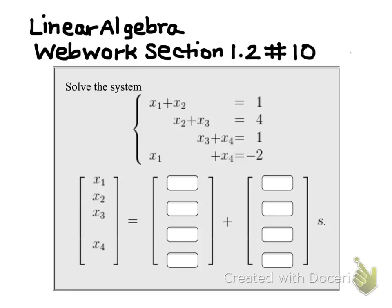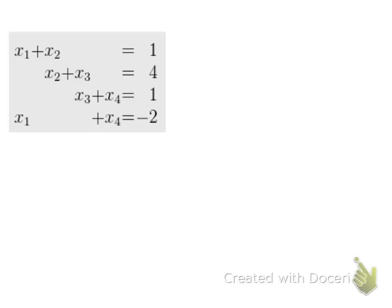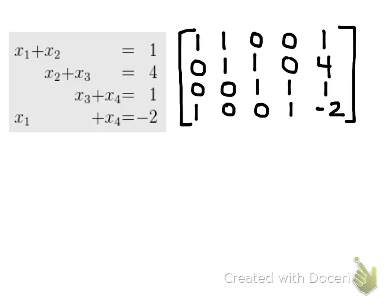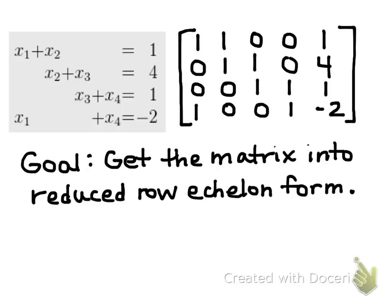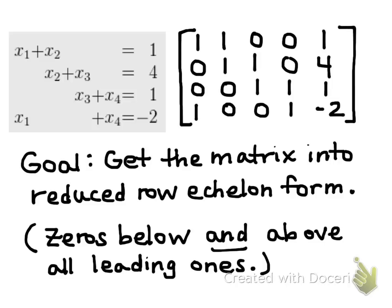The first thing that I want to do in order to solve the system is to put it into an augmented matrix. I'm going to take this system, and each coefficient will become an entry in my matrix. Now my goal becomes to get the matrix into reduced row echelon form, as we did in class, which means that we'll have zeros below and above all leading ones.